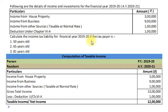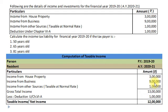From this information, we will calculate taxable income for the Financial Year 2019-20 first. Computation of Taxable Income – Person: Resident Individual, Previous Year 2019-20, Assessment Year 2020-21. Income from House Property – Rs. 3 lakh; Income from Business – Rs. 9 lakh; Income from Other Sources – Rs. 1 lakh. Gross Total Income: Rs. 13 lakh. Less Deductions under Chapter 6A – Rs. 1 lakh. Net Taxable Income: Rs. 12 lakh.